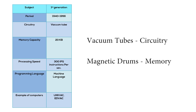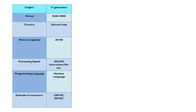First generation computers were huge, taking up entire rooms. They used machine language, which is the lowest-level programming language. Examples of first generation computers are UNIVAC and EDVAC.